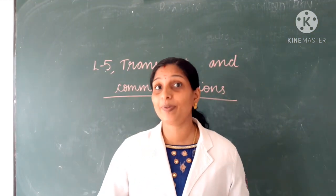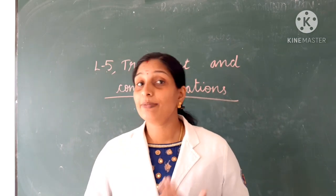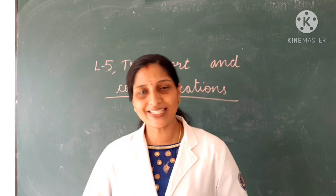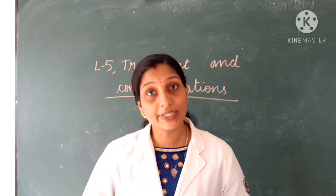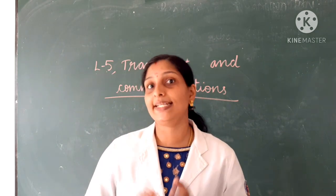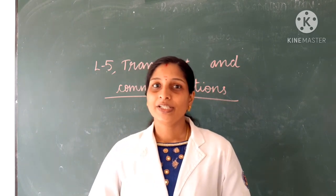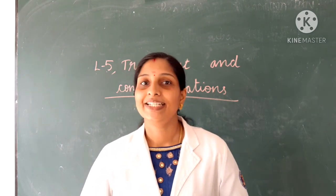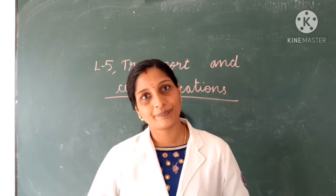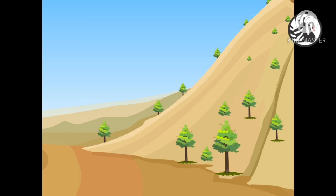How do we travel from one place to another? We use different types of vehicles. Transport means the movement of people or things from one place to another, and the vehicles used for transporting people or goods are called means of transport. Early humans would have seen logs rolling down a hill and realized that things are easier to move if they are rolled rather than pushed or pulled.